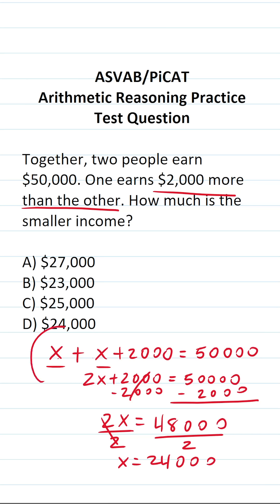This is one income right here. This is another income right here. We can see that X is going to correspond to the smaller income. And we know X is $24,000. So the smaller income is D, $24,000.